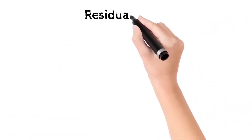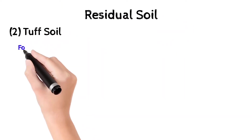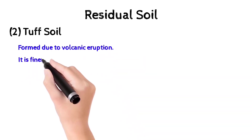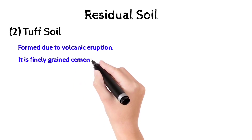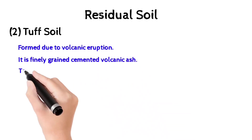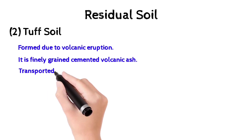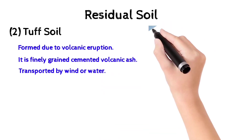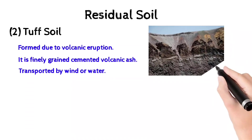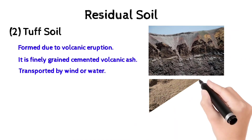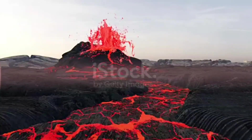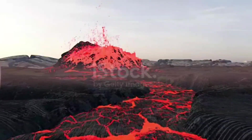The second classification of residual soil is top soil. It is a soil formed due to volcanic erosion. It is finely grained cemented volcanic material and is transported by wind and water. After a volcanic eruption, top soil is transported by wind and water.